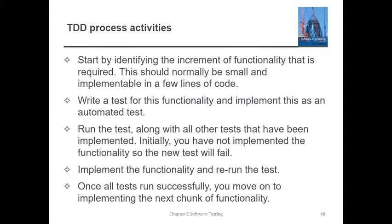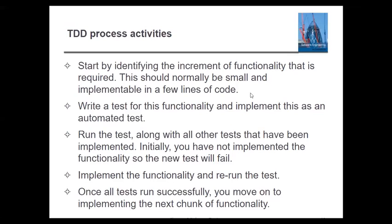First, write the functions only for your addition program. Once done, go for testing the addition code. If it succeeds, only then go for the subtraction program. In this way, you increment your lines of code and go for the next round of testing. This process happens automatically inside the TDD process.